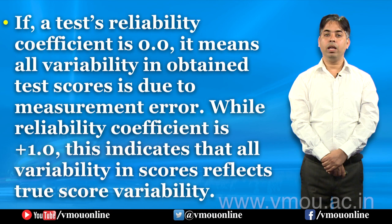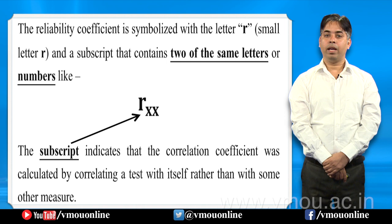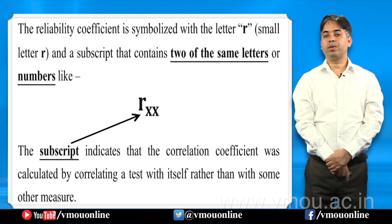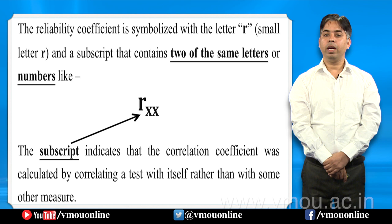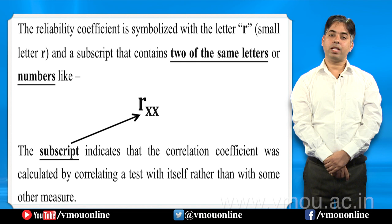The reliability coefficient is symbolized with the letter small r. To show that we are using reliability, we use r with a subscript double x — that is, r sub xx. This subscript indicates the correlation coefficient that results from correlating a test with itself.